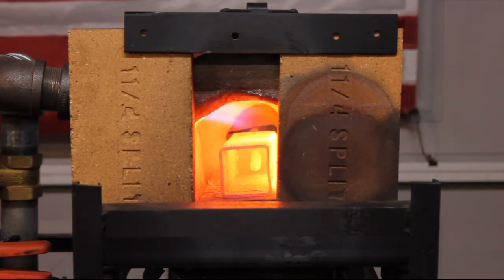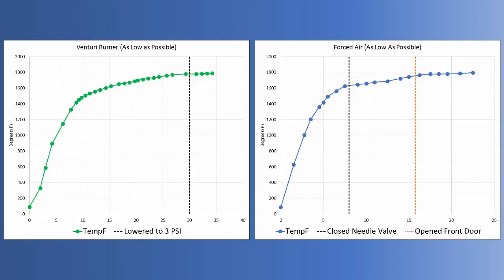So here are the results on how the two burners performed. You can see that they both leveled off around 1800 degrees Fahrenheit, which like I said earlier was a little more than I thought they would. You can see I tried some methods during the process to slow it down, so I lowered the Venturi burner down to 3 psi,